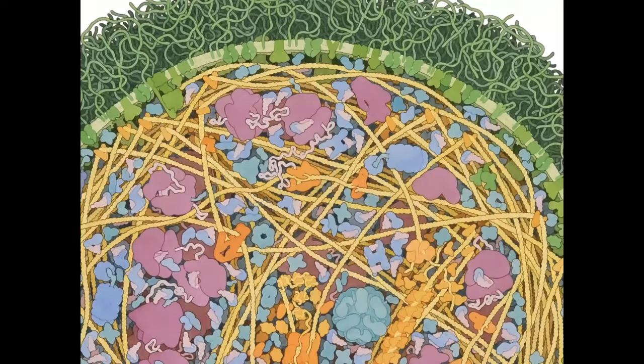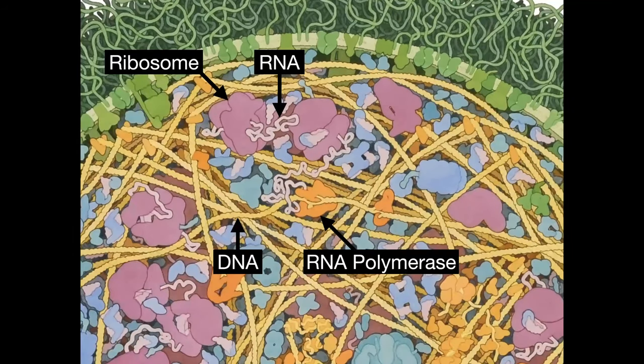The execution of these circuits involves the coordination of RNA polymerases reading the DNA to produce RNA transcripts that are then subsequently translated by ribosomes. This is a really complex process, but to programme it we don't actually need to worry about a lot of those aspects — we just need to worry about how the DNA is actually read.